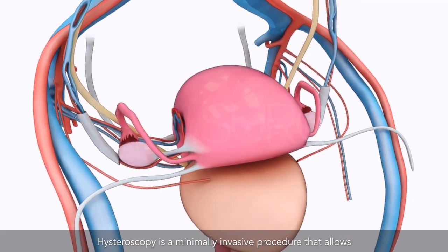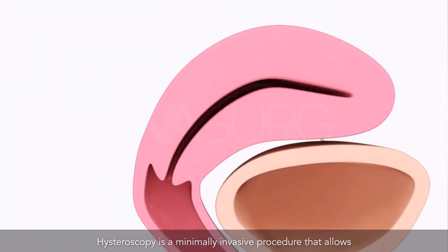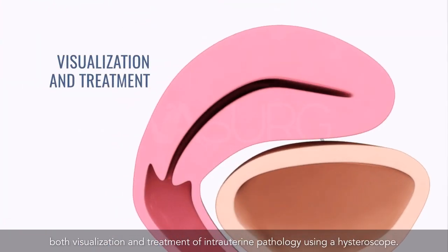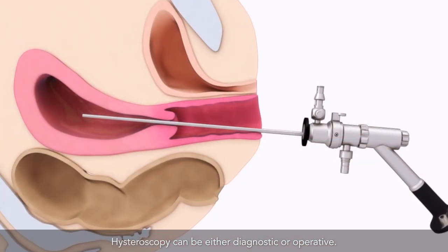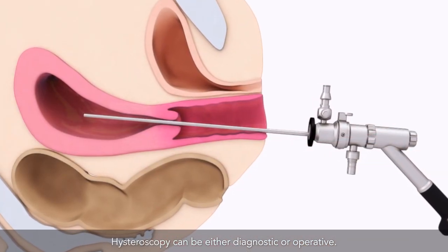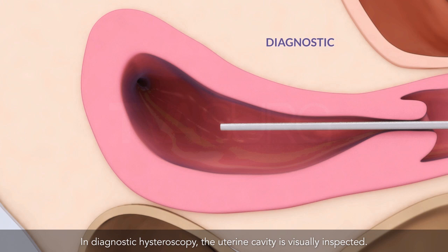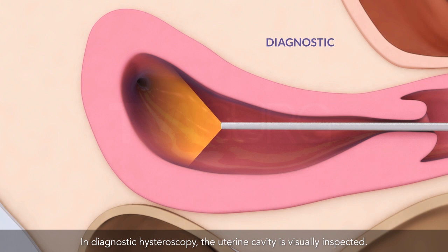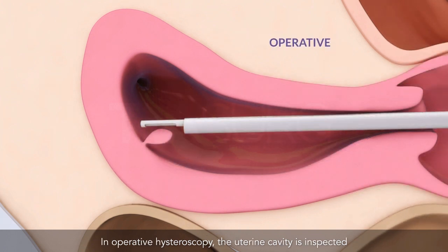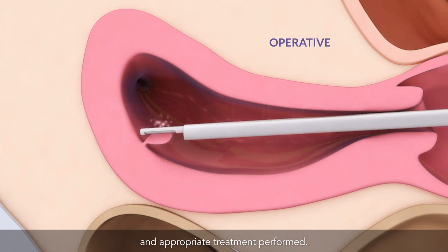Hysteroscopy is a minimally invasive procedure that allows both visualization and treatment of intrauterine pathology using a hysteroscope. Hysteroscopy can be either diagnostic or operative. In diagnostic hysteroscopy, the uterine cavity is visually inspected. In operative hysteroscopy, the uterine cavity is inspected and appropriate treatment performed.